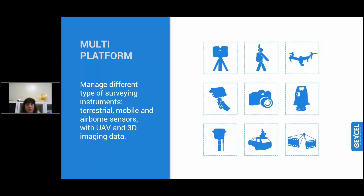I will quickly go through this section because I prefer to leave the floor to Tiziana who will go deep technically into the different software features. The software is a multi-platform software, meaning you can manage different kinds of data coming from different sensors — all within one single software platform. You can import tripod data as well as SLAM data, mobile, airborne, hand-held laser, total station, GPS, and imagery. In one single software platform you can merge all the data coming from the different sensors. This is very important because it means you don't need any other third-party software — you can always work within the same platform to merge all your data.